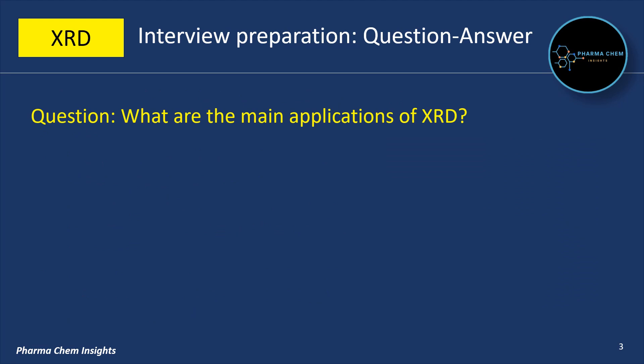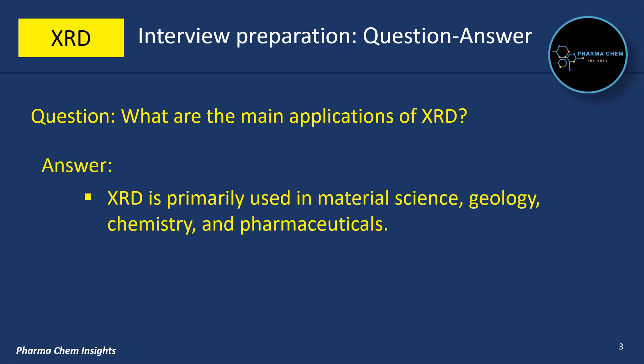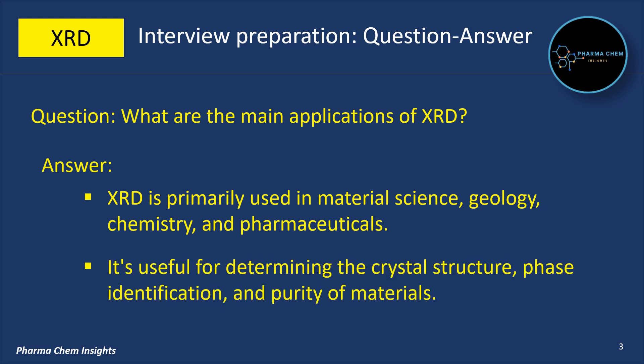Next question: what are the main applications of XRD? XRD is primarily used in material science, geology, chemistry and pharmaceuticals. It is useful for determining the crystal structure, phase identification and purity of materials.